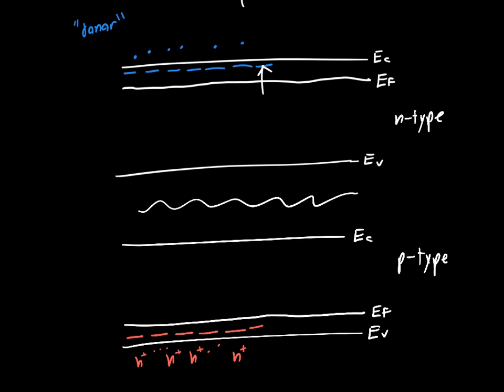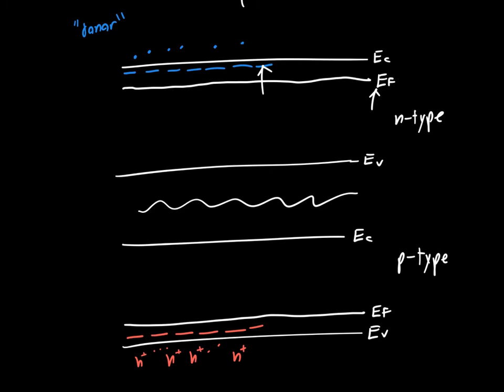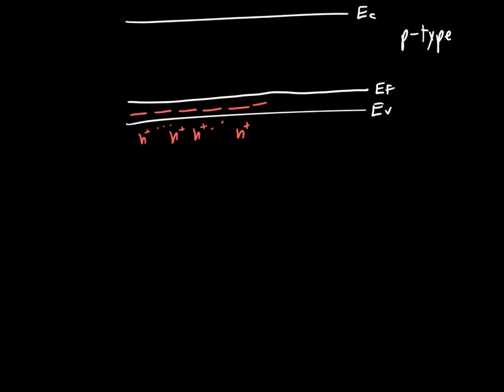So we see that this Fermi energy, Ef, gives an indicator of the type of the silicon. So we'd expect that if we didn't add any dopant and we had our conduction band and our valence band, we'd expect the Fermi energy to be somewhere in the middle, somewhere here.